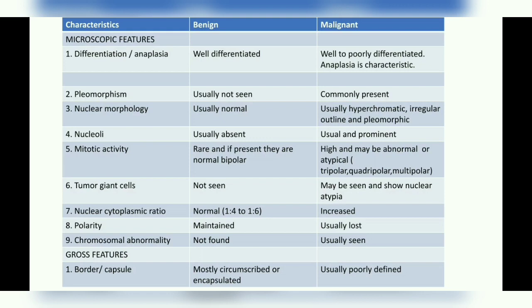Moving to gross features — regarding the capsule, in a benign tumor it is usually circumscribed and encapsulated, making the tumor palpable and a movable mass. This also provides a surgical advantage as it is well demarcated from the surrounding tissue, making excision easier. However, some benign tumors do not have a capsule — for example, hemangioma (a benign tumor of blood vessels) and uterine leiomyoma (a benign tumor of smooth muscle).